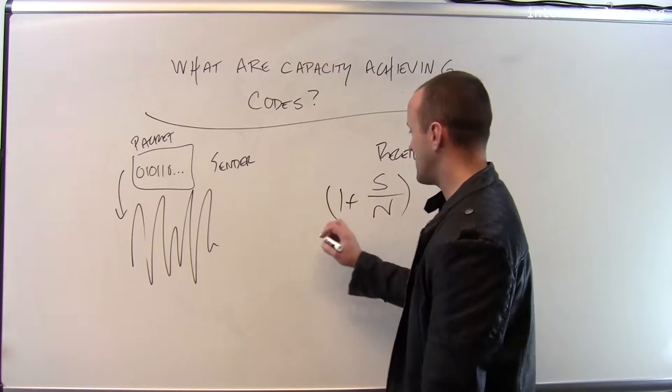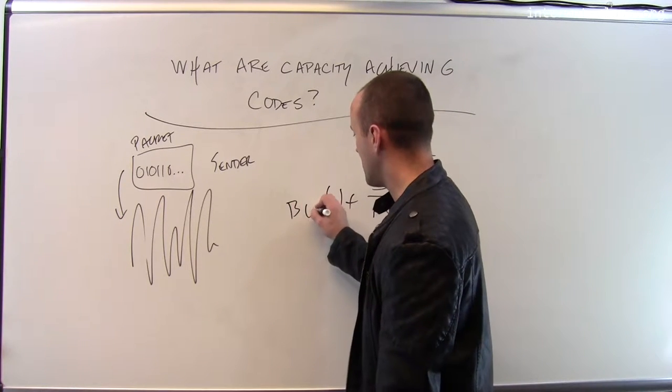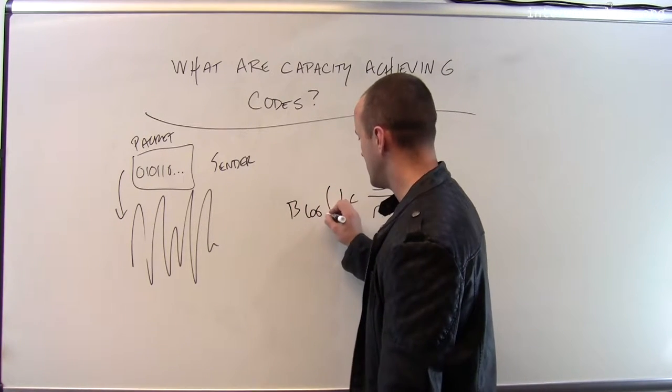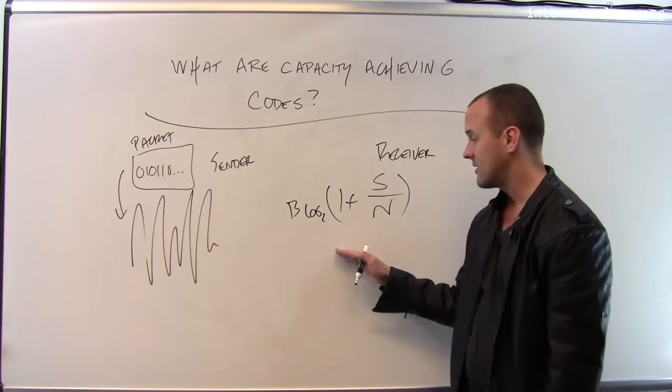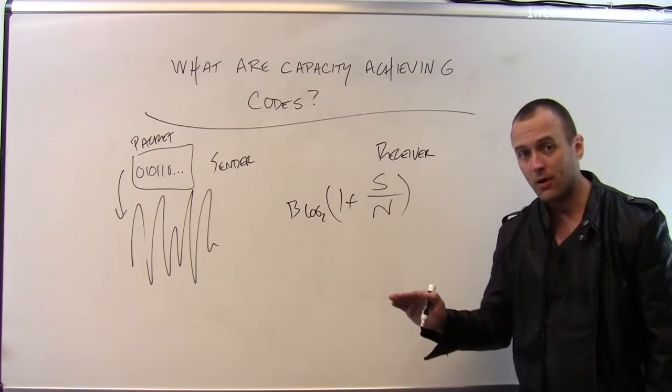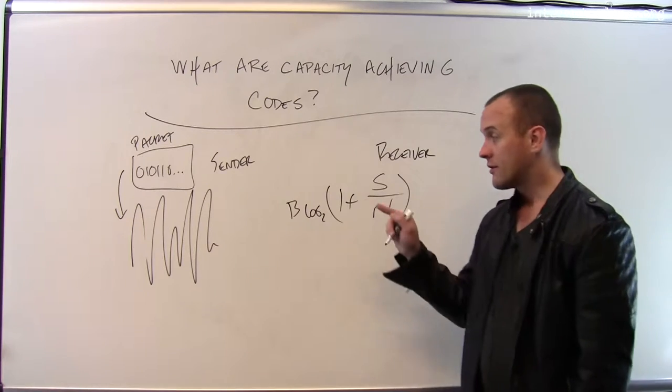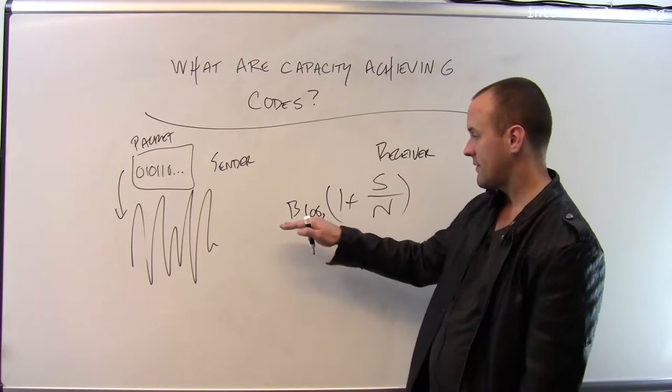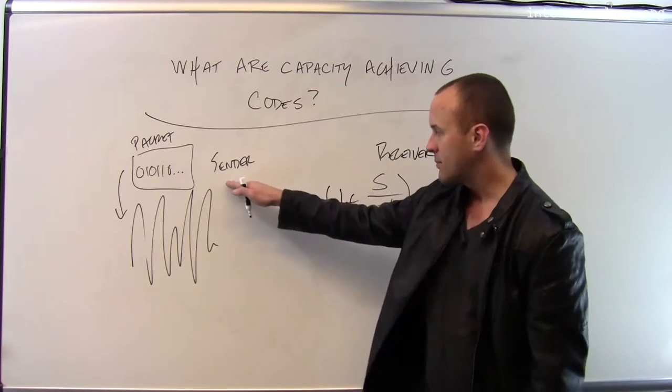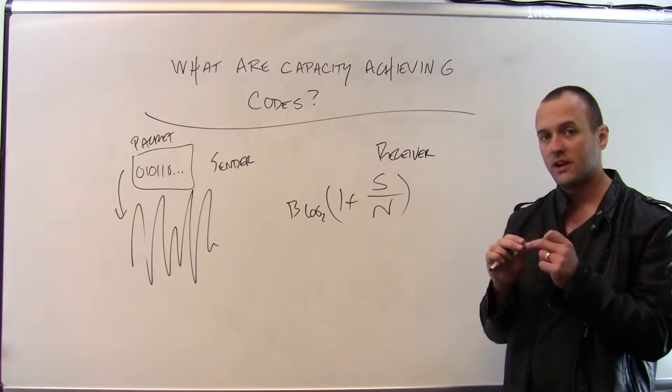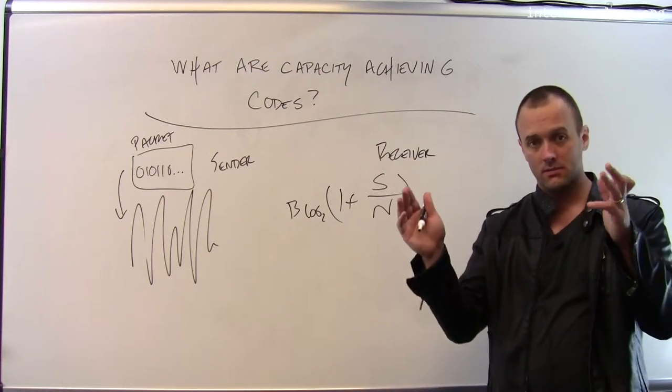I know how much bandwidth I'm using and what I can do is I can plug this into the Shannon capacity theorem and I can compute the bound on the capacity of the channel. So there is no way for a channel of a given bandwidth for a particular sender receiver pair to transmit more than a specific bitrate.